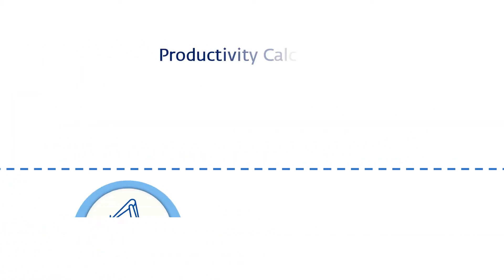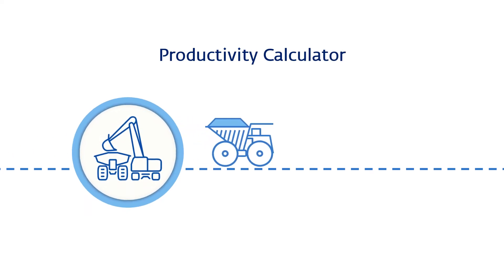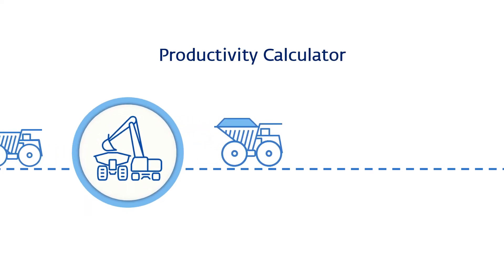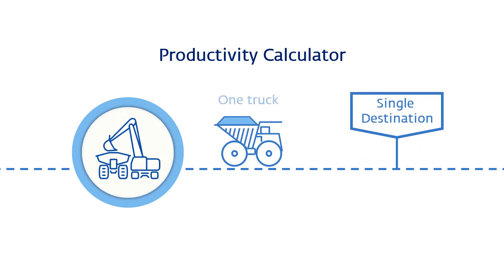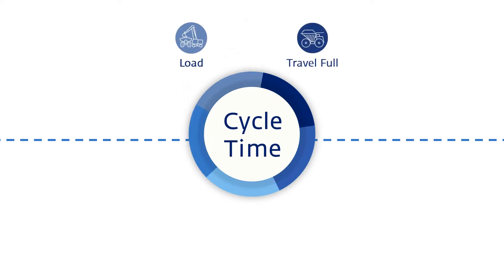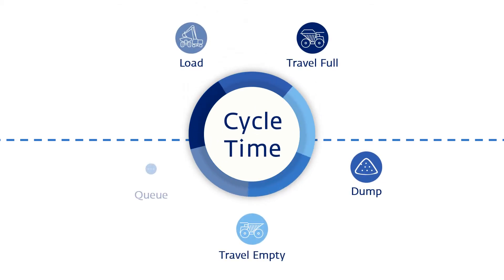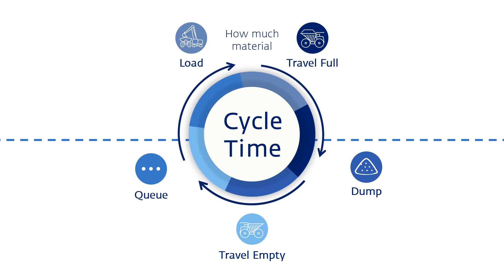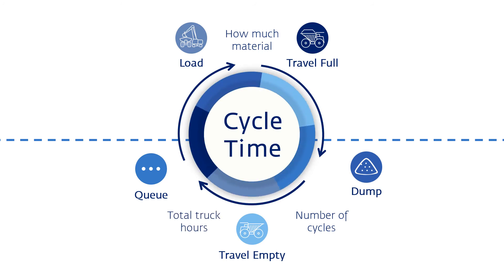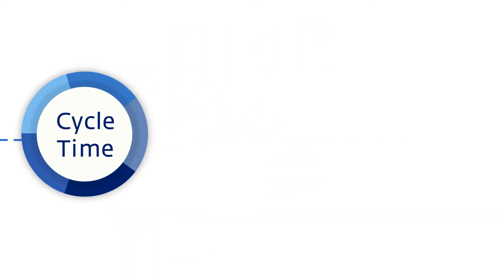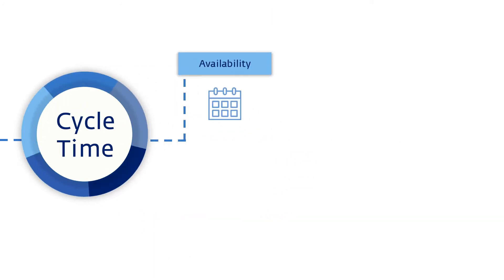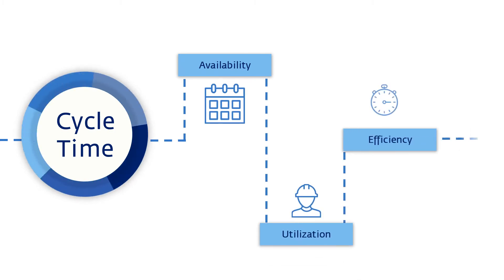A common way of overcoming this complexity when estimating trucking requirements is to simplify the haulage cycle by modeling a single source to a single destination for one truck. The theoretical cycle time is calculated by simply adding the load time, a calculated travel time, and dump time together. If we know how much material is being moved, we can calculate the number of cycles and the total truck hours required. These hours will then need to be adjusted using availability, utilization, and efficiency factors.